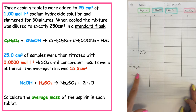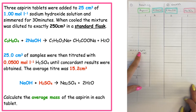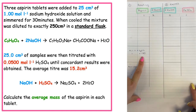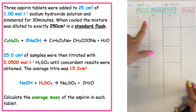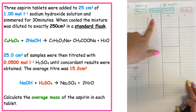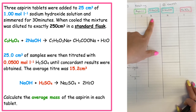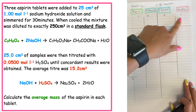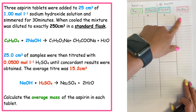To find the mass, we use mass = moles × GFM, and the GFM of aspirin is given as 180 grams. To work out the number of moles, we need to apply our mole ratio. From the balanced equation, we can see that one mole of aspirin reacts with two moles of sodium hydroxide, and in the second equation, two moles of sodium hydroxide react with one mole of sulfuric acid.